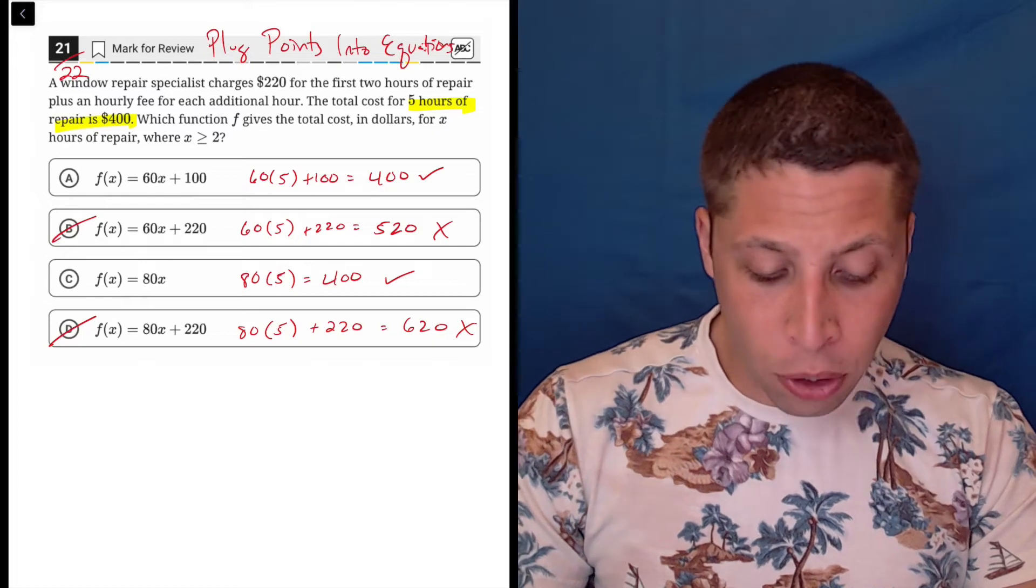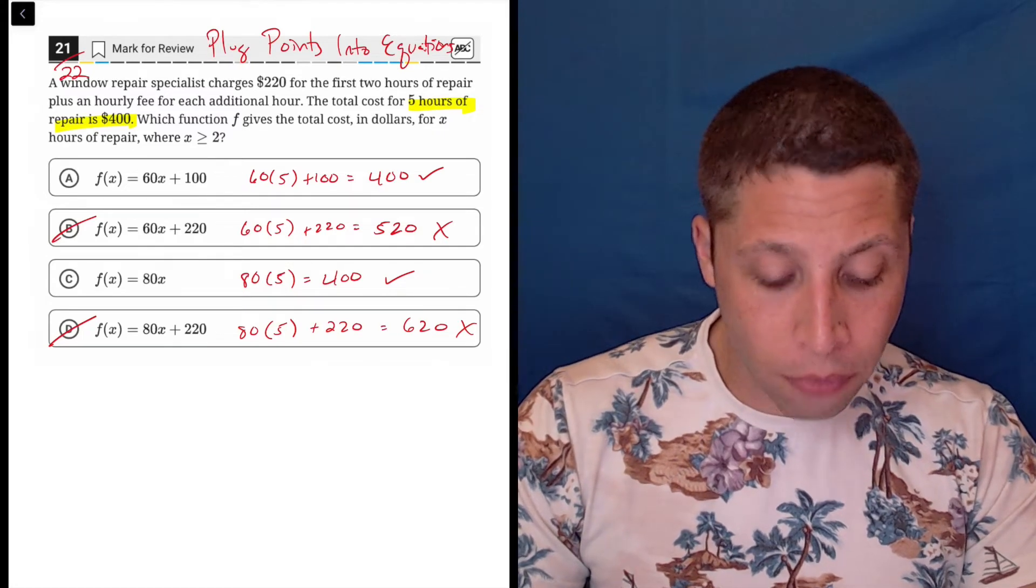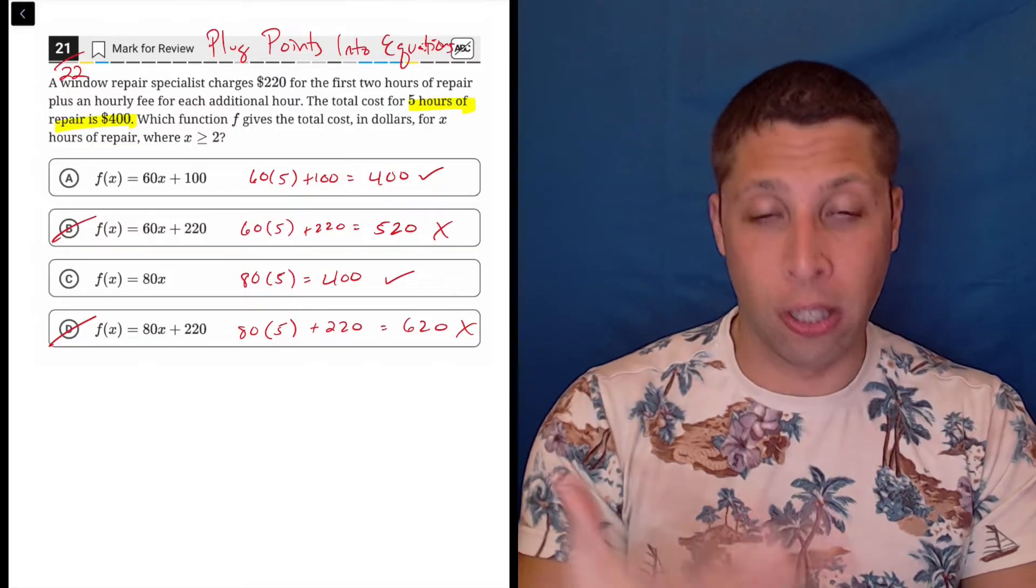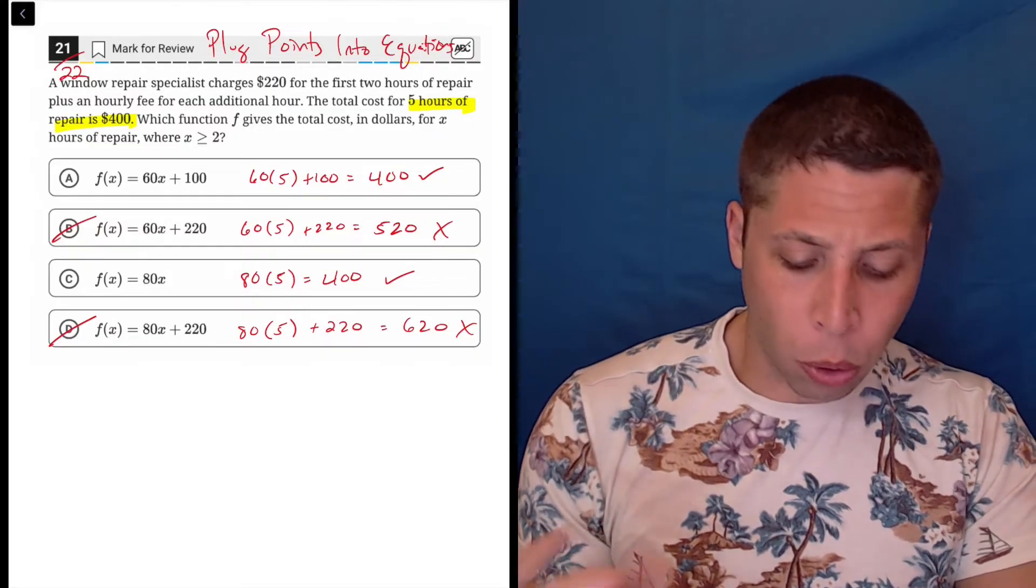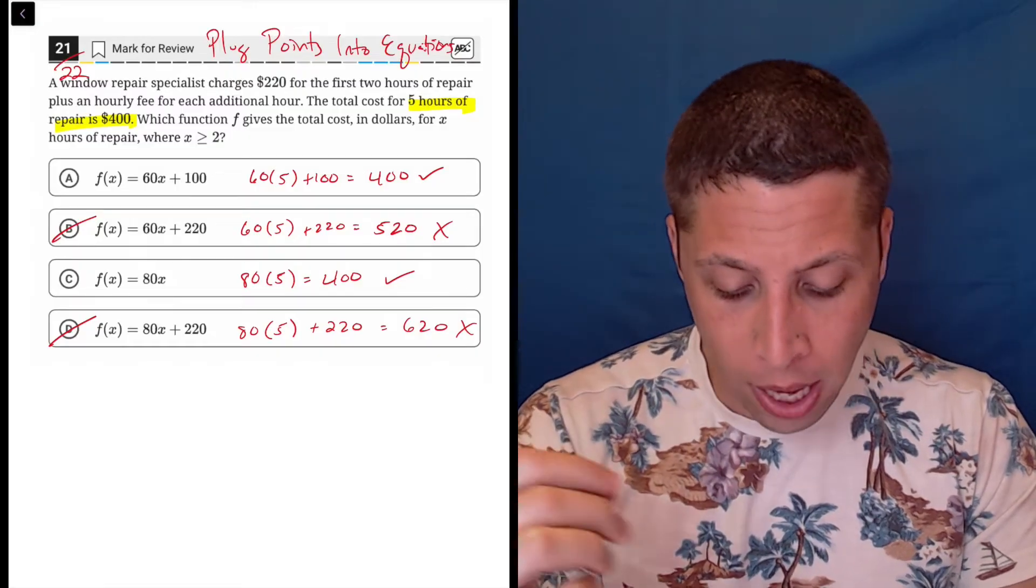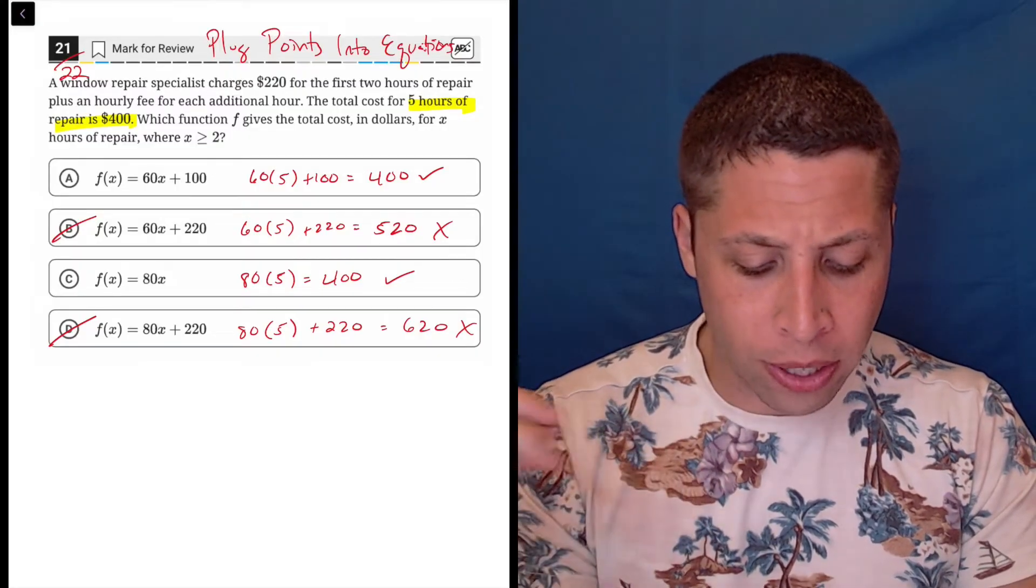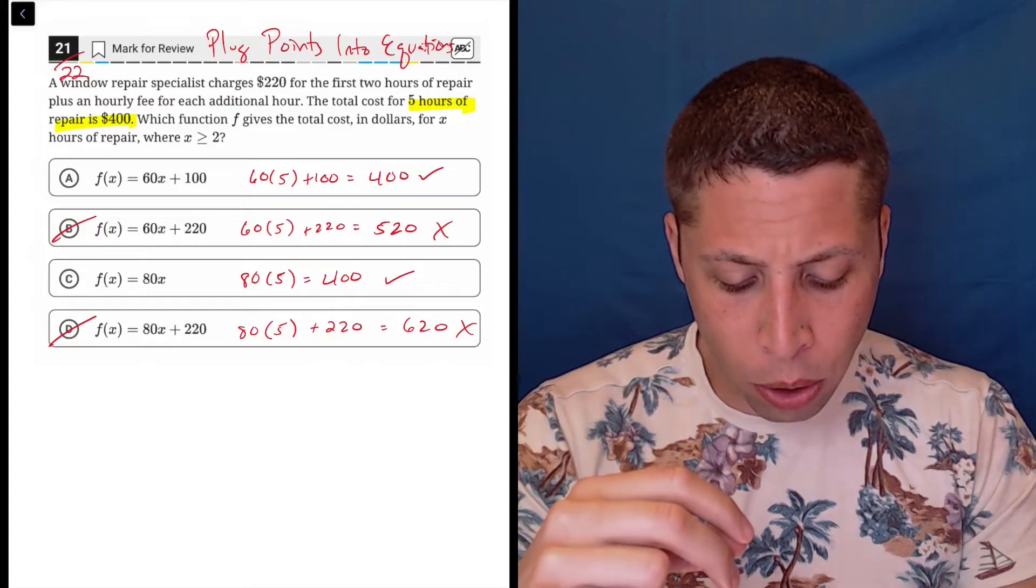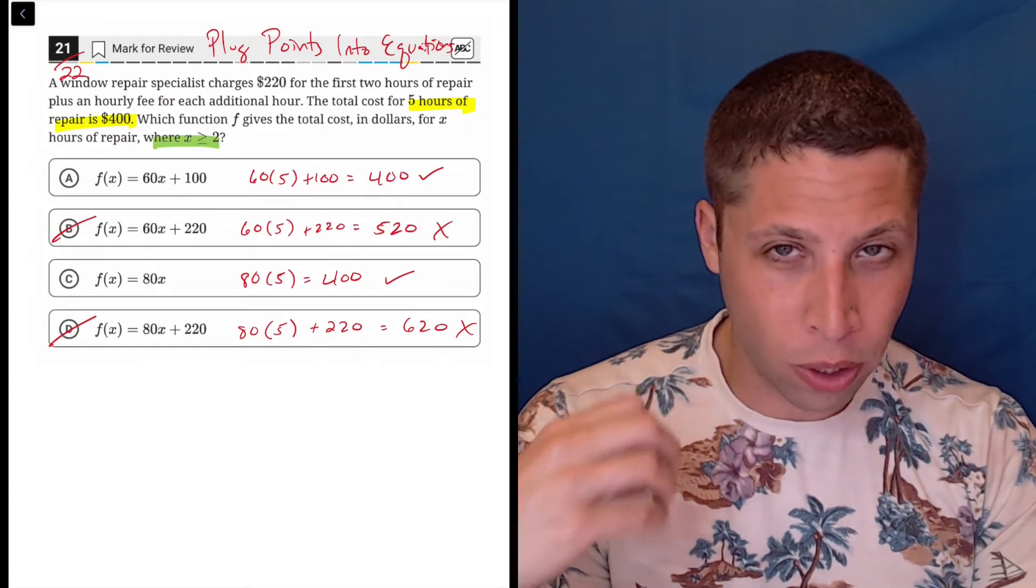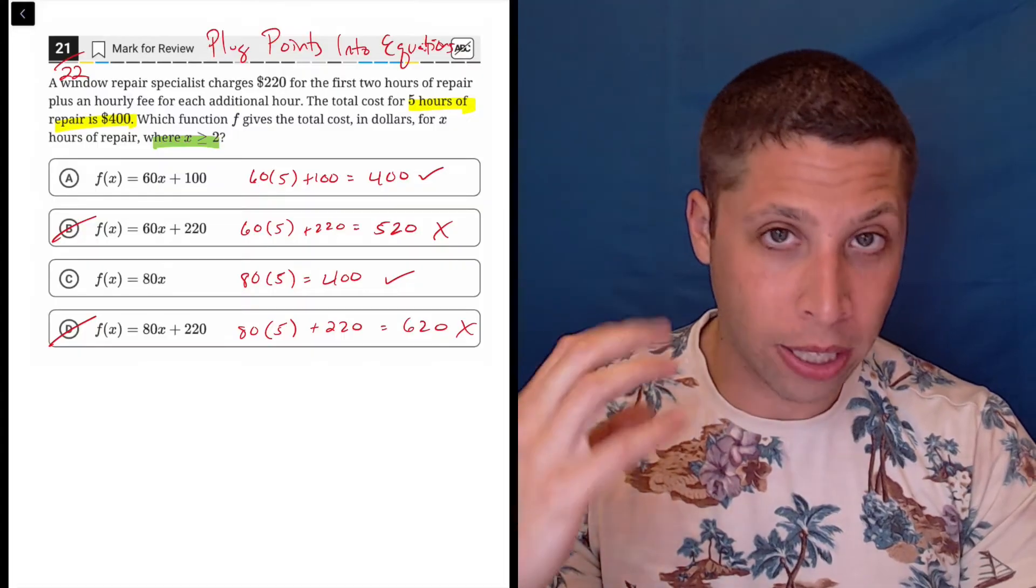Now I would love to use another point. Very often when we do these questions, the point that is best is the zero point, the starting point. But this story is a little quirky, right? It says they charge 220 for the first two hours of repair and then an hourly fee for each additional hour. And especially at the end, they tell us this function only works where X is greater than or equal to two.